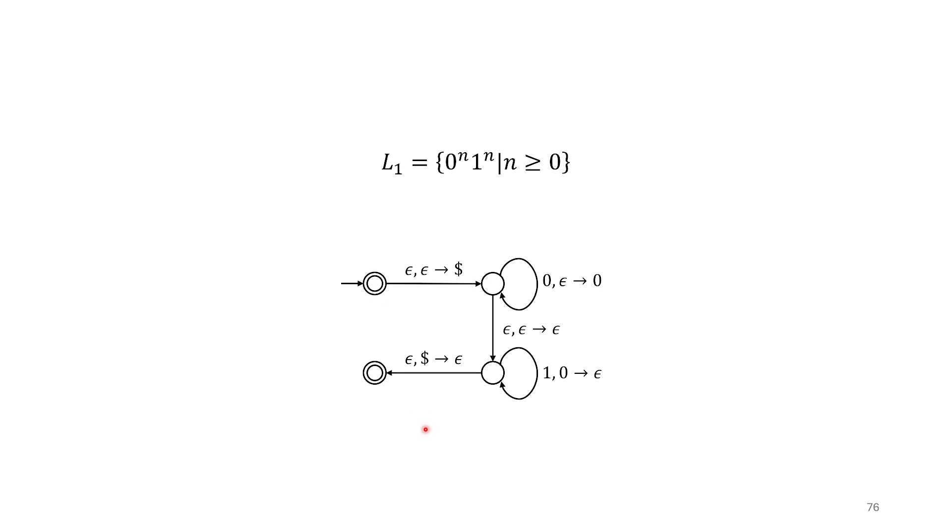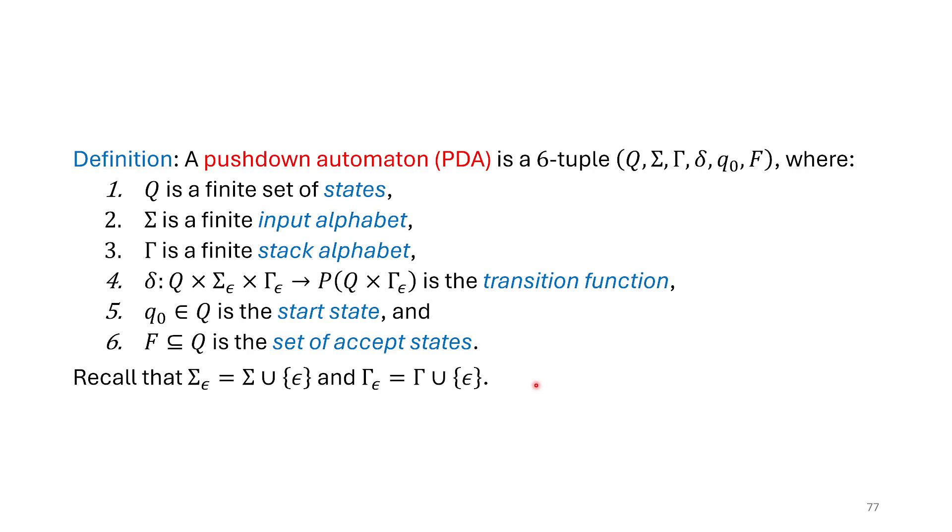So this is our first example of a pushdown automata. And as we've seen in some of our other models, we also want to have a formal definition of what that is. So here we have our pushdown automata formal definition, and maybe as becoming a little bit more familiar, we're expecting to see it defined as a tuple of some kind, some collection or sequence of other formal things, other formal mathematical definitions. So in this case, it's a six tuple. We've seen five tuples and four tuples before. Why is it a six tuple?